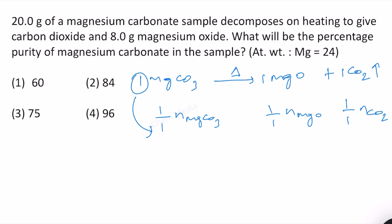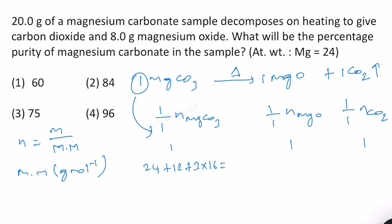For one mole of each species, we use: number of moles = mass / molar mass. So we find the molar mass of all of them. Molar mass of MgCO₃ = 24 + 12 + 3×16 = 84 g/mol. For MgO = 24 + 16 = 40 g/mol. For CO₂ = 12 + 2×16 = 44 g/mol.